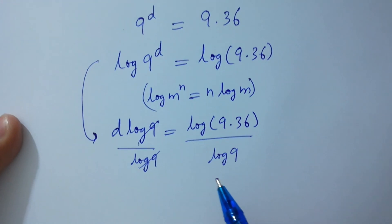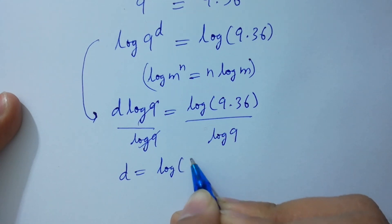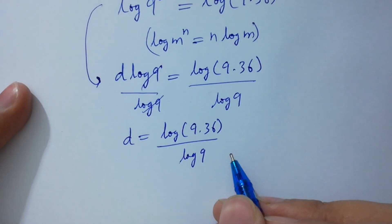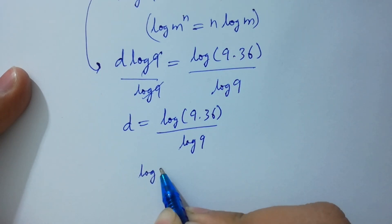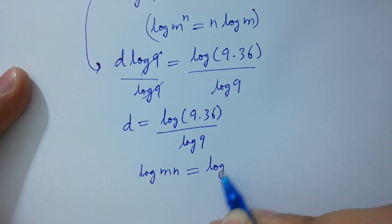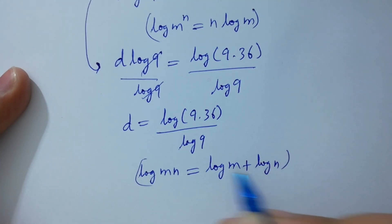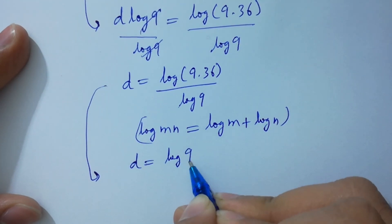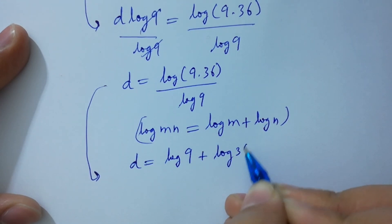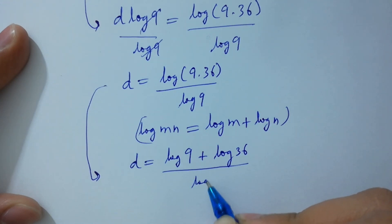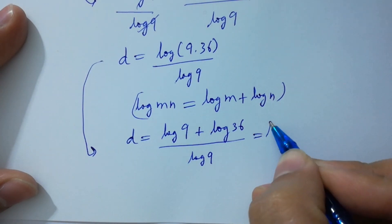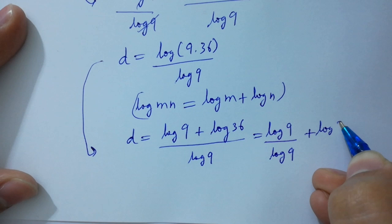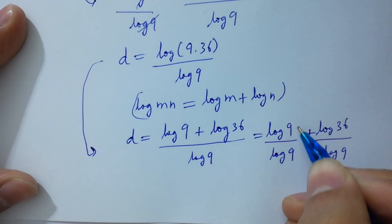Log 9 and log 9 will be cancelled, giving d equal to log(9 times 36) over log 9. Using the rule log(m times n) equals log m plus log n, d equals log 9 plus log 36 over log 9, which separates to log 9 over log 9 plus log 36 over log 9.